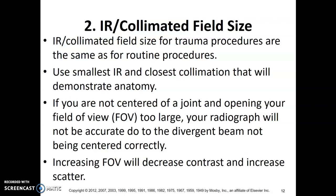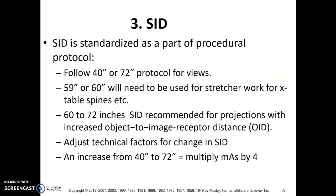When you increase your field size, you increase scatter, which decreases image quality. Also, if you're wide open on an ankle, your central ray won't be on the ankle joint — it'll be angled with the divergent beam. Collimate as you normally would to preserve those fine details.